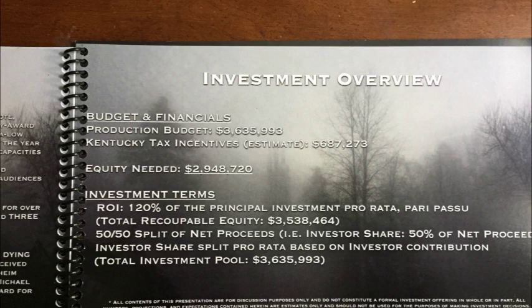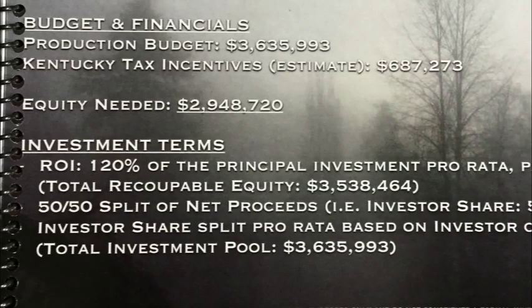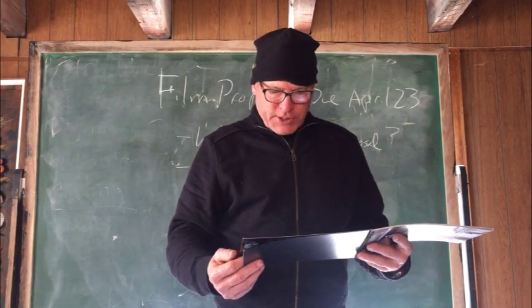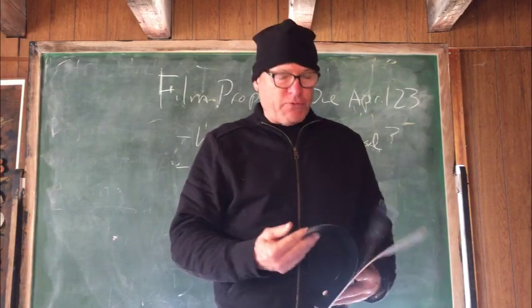Investment overview — there is the budget and financials, what the budget of your film is. This seems to say the Kentucky tax incentive is coming in at this amount. The offering: we need $2,900,000. Investment terms: 120% of the principal investment pro rata pari passu means the investor gets paid back first money out, then a 50-50 split of net proceeds afterwards. So that's an investment overview page.